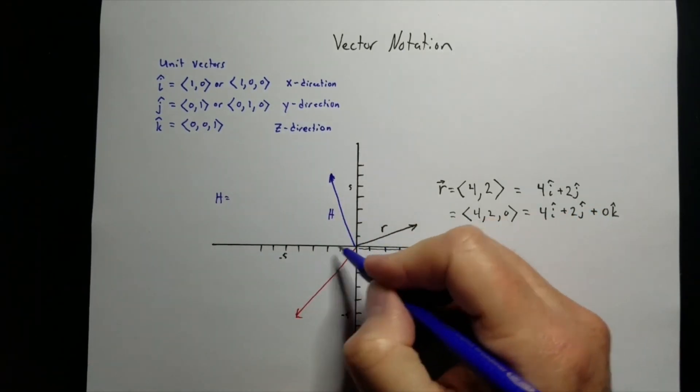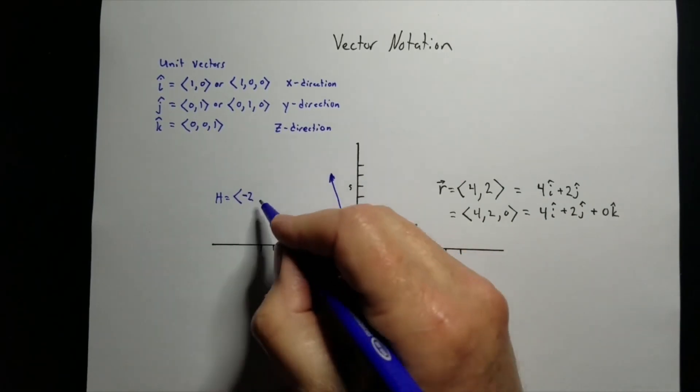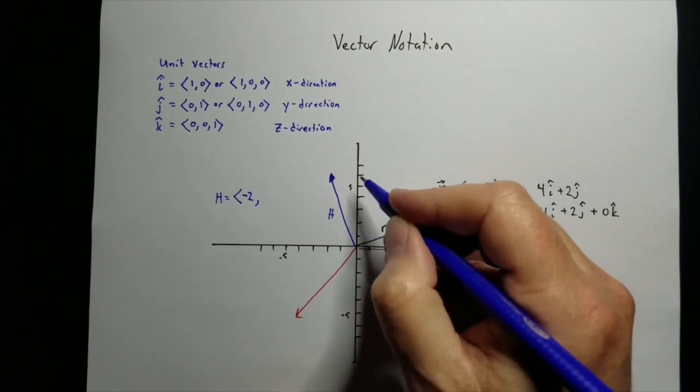So h would equal, we're over 2. It's this way, so it's negative. And we're up 6.